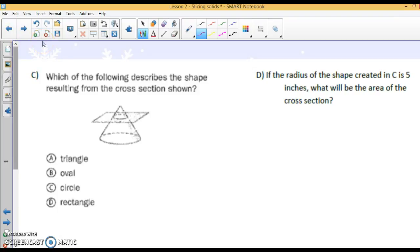Here we go. Which of the following describes the shape resulting from this cross-section? So if we do a horizontal slice of this cone, it's going to be a circle.